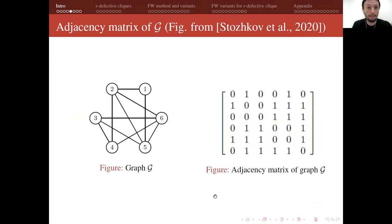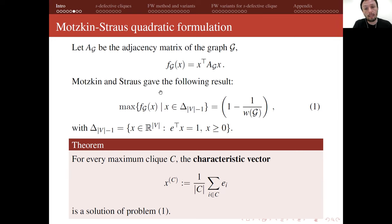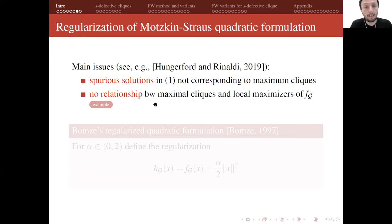ω(G) is the clique number of the graph. Given a simple graph, one can build the adjacency matrix and derive the famous Motzkin-Straus formulation, where we maximize a quadratic function over the probability simplex. Motzkin and Straus proved a nice relationship between this object and the clique number of the graph. For every maximum clique C, the characteristic vector of the maximum clique is a solution to this problem. However, the Motzkin-Straus problem has spurious solutions that do not correspond to maximum cliques.